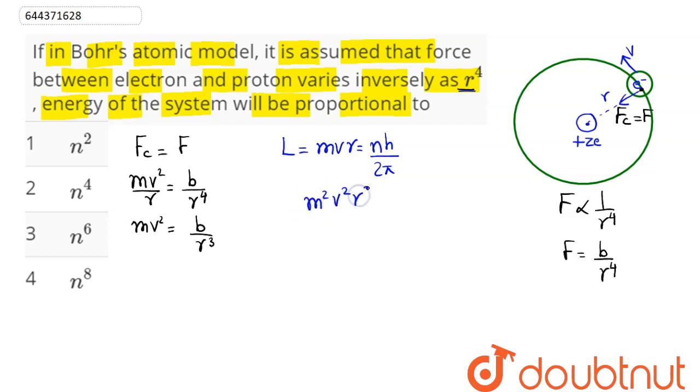This comes as m square v square r square is equal to n square h square divided by 4 pi square. Now using this relation where mv square is equal to b by r cube, so we have m into mv square here is b divided by r cube into r square is equal to n square into h square divided by 4 pi square.